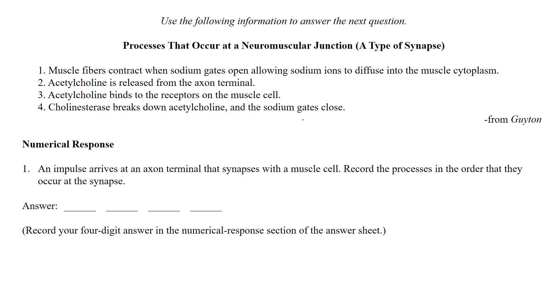They love these type of questions and you often see these type of questions about the synapse where they'll give you some events and require you to put them in the correct order. So this is another numerical response type question. This is talking about the neuromuscular junction, which is just another way of saying the synapse.